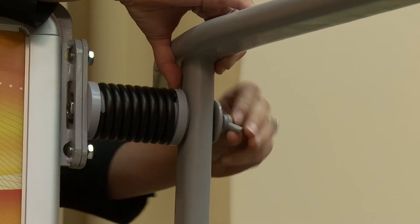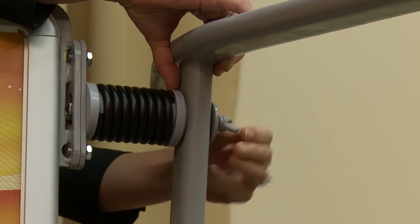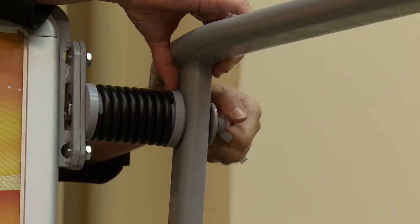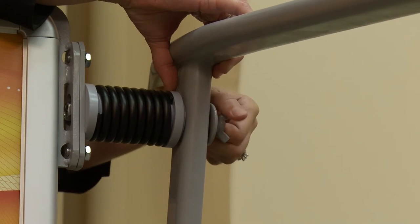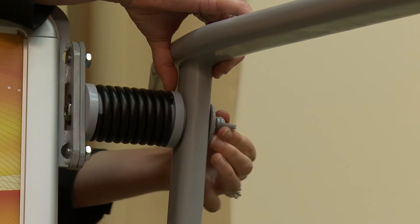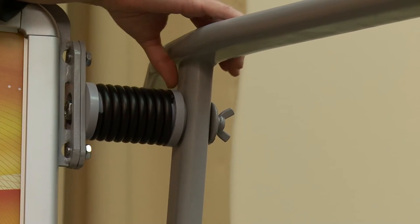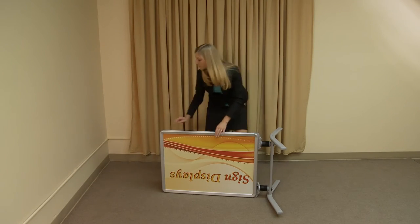Next, fully tighten the top wing bolt. With the base firmly attached, lift the display into the upright position.